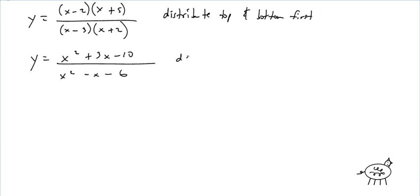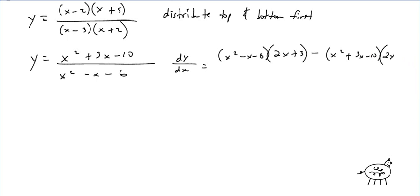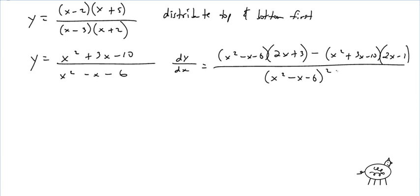Then dy/dx equals the bottom times the derivative of the top, which is 2x + 3, minus the top times the derivative of the bottom, which is 2x − 1, all over the bottom squared. You can simplify the numerator using addition and subtraction between those terms; leave the bottom alone.